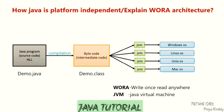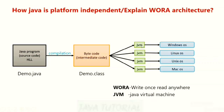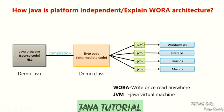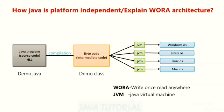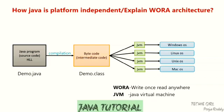The JVM houses the Java interpreter. The Java interpreter takes this bytecode and checks it line by line for any errors. If there exist any errors in the code, it will display the error message. Otherwise, it will give the output on whichever operating system you are using.